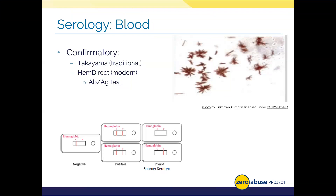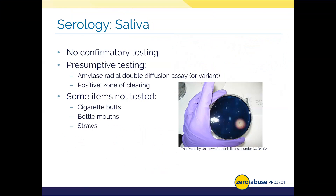Turning to another body fluid: all saliva testing is presumptive-based. There's no confirmatory test that exists for saliva for a couple of reasons. First, the target enzyme — amylase — used in presumptive saliva testing is present in other human body fluids and is made by other plants and animals. Second, the buccal cells from our mouth are more forensically relevant since they contain DNA, as opposed to trying to determine saliva presence in most cases.